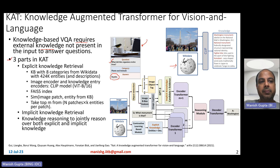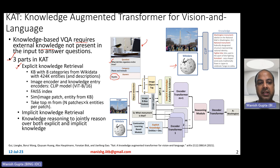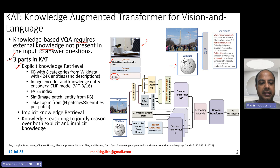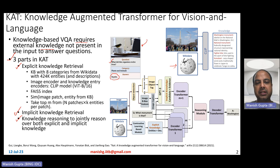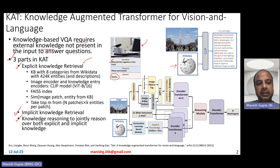There are three parts of the proposed system, knowledge augmented transformers. The first part is explicit knowledge retrieval, which is basically trying to identify knowledge from Wikidata knowledge bases. The second part is implicit knowledge retrieval. The third part is basically reasoning on top of these two explicit and implicit knowledge pieces, so as to then finally answer the question.